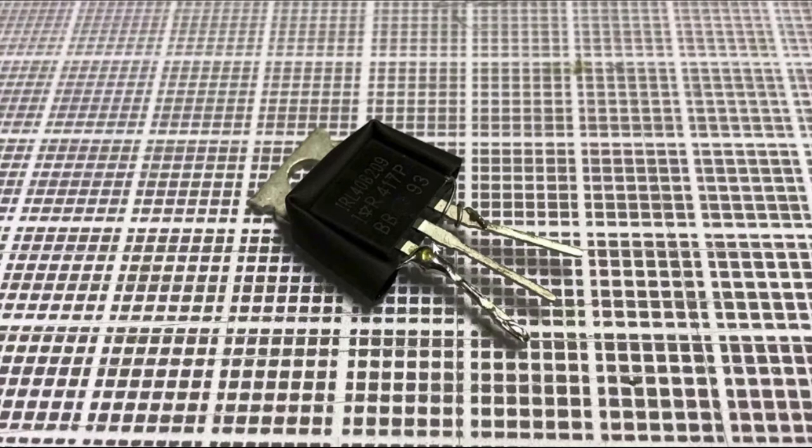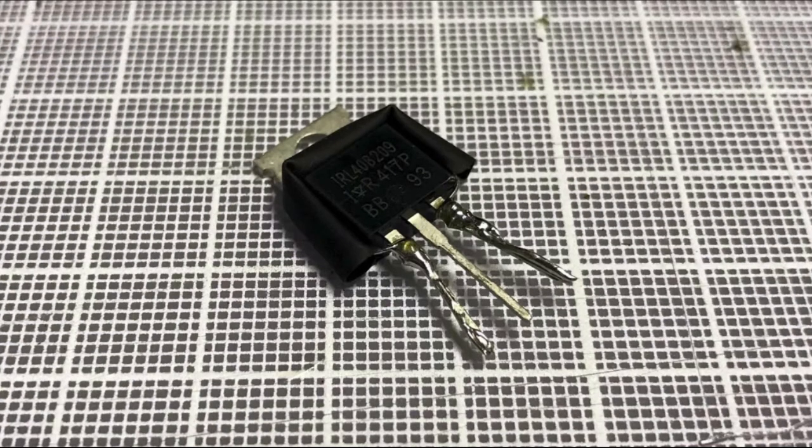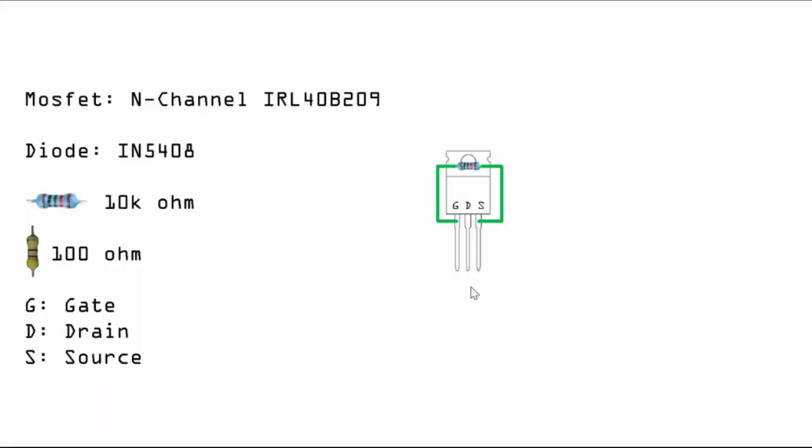So once I solder the gate, I'll put a heat shrink over the resistor and then again I'll just tour around here. You can pull the pin slightly apart, it will be easier to solder. Then I'll just solder it. So after this procedure you get this.